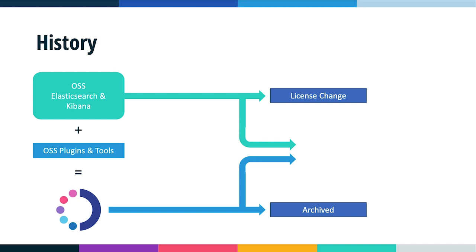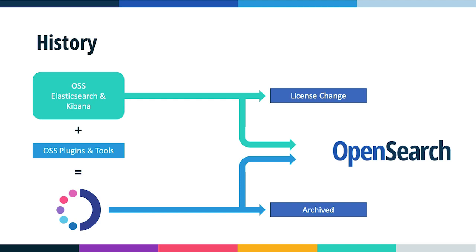We decided to move forward and fork the Apache 2.0 code of Elasticsearch and Kibana, moving it out as a fork to continue in the open source world. We also decided to fork and effectively archive OpenDistro, with everything going forward to work with OpenSearch. OpenSearch is the combination of the forked versions of Elasticsearch and Kibana, plus all the plugin tools that add rich features — that's what OpenSearch really is.